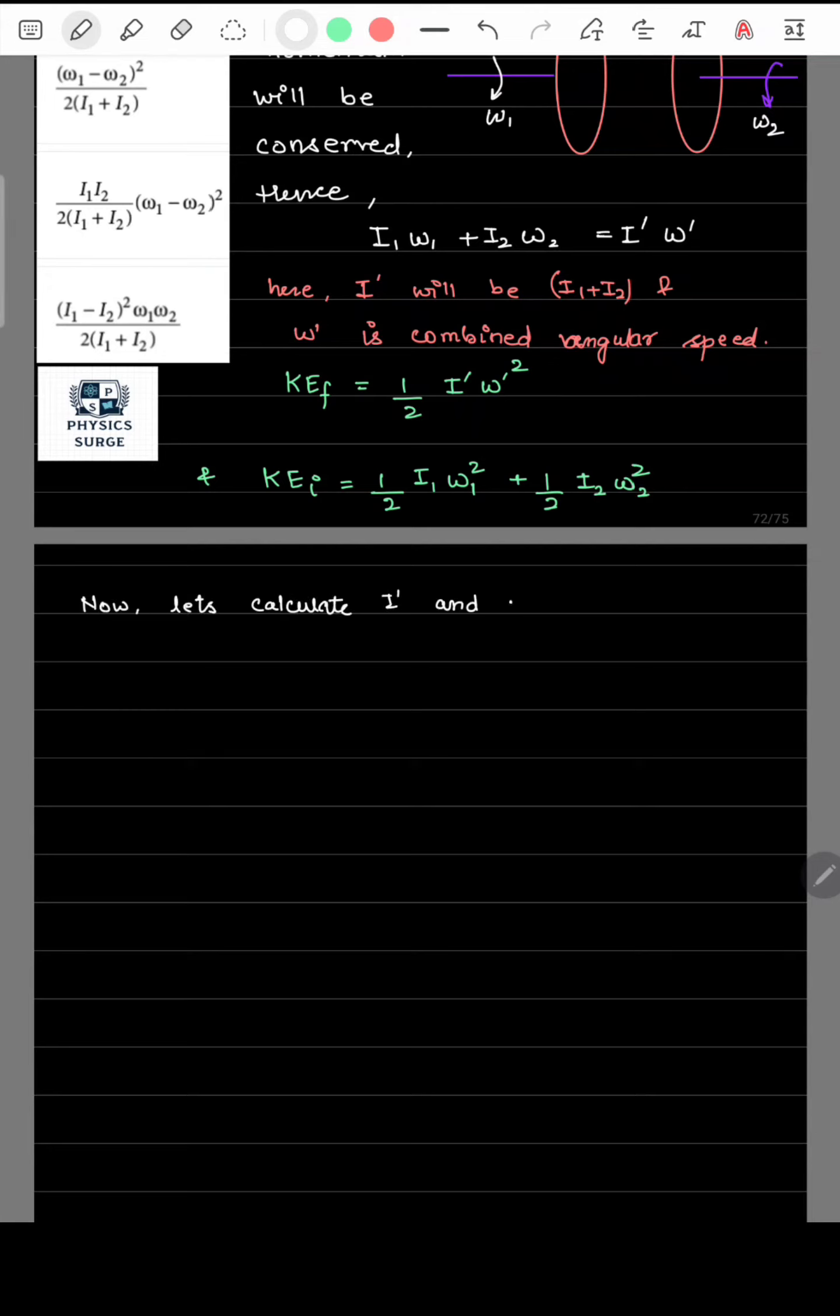Now, let's calculate the i dash and omega dash values. i dash as we have discussed i1 plus i2, hence omega dash can be written as i1 omega 1 plus i2 omega 2 upon i1 plus i2.